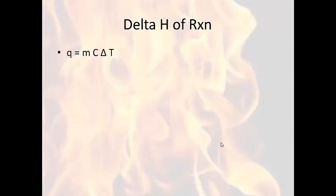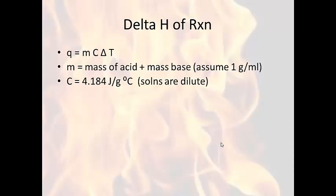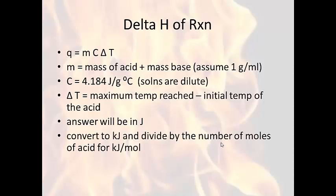The calculations are very similar. Use MC delta T to find the delta H of neutralization. This time, mass is the mass of the acid solution plus the mass of the base solution, assuming a density of one gram per milliliter for both. Use the specific heat of water and your maximum delta T. Convert your answer from joules to kilojoules, then divide by the number of moles of acid. Average your two trials for each acid-base combination and report that value.